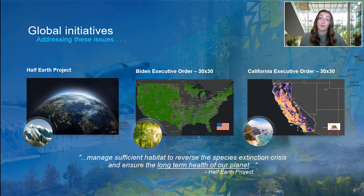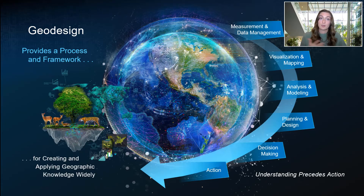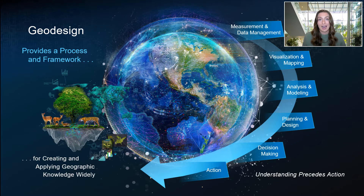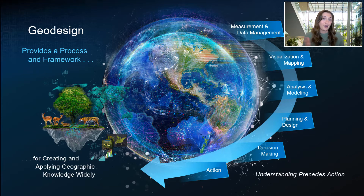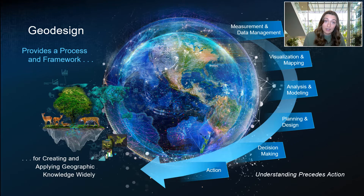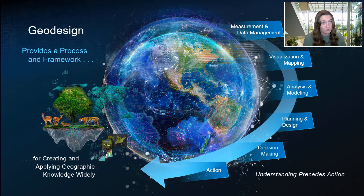If we accept the call to conserve 30% of land and water, or half in the case of Half-Earth, the question becomes: how? How do we prioritize, weigh, and select what areas to protect? The answer might not come as a surprise to many of you. The answer is an iterative, geographically informed, and holistic planning process. The answer is geodesign.